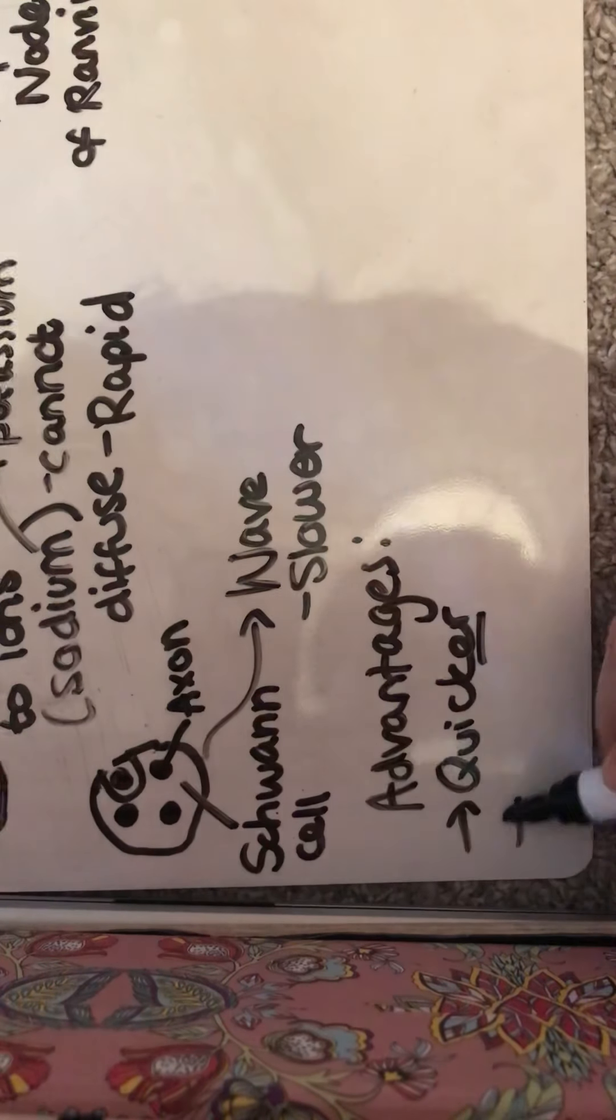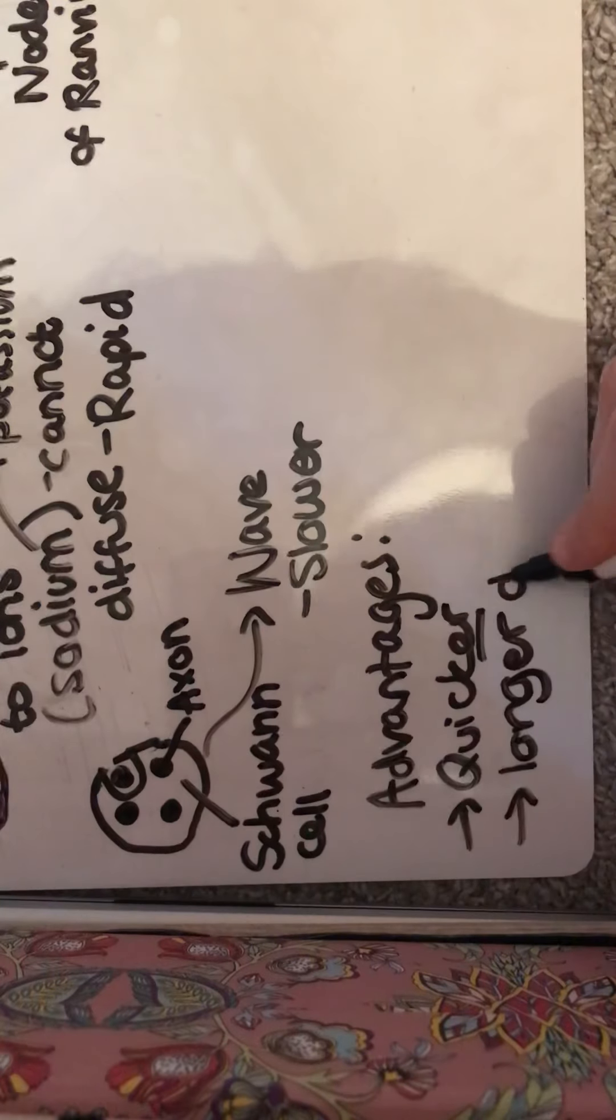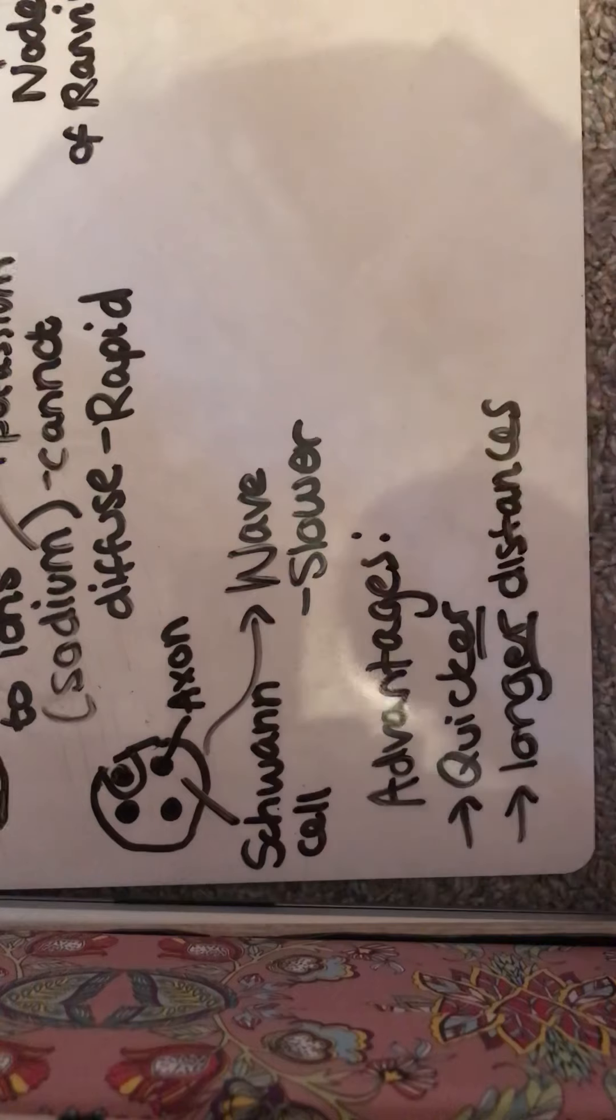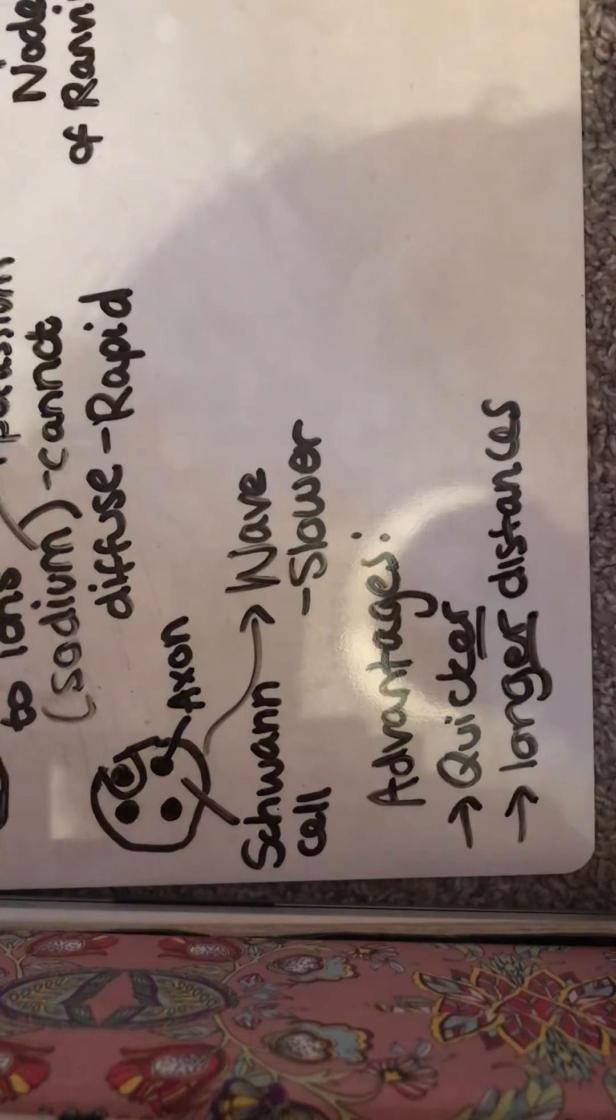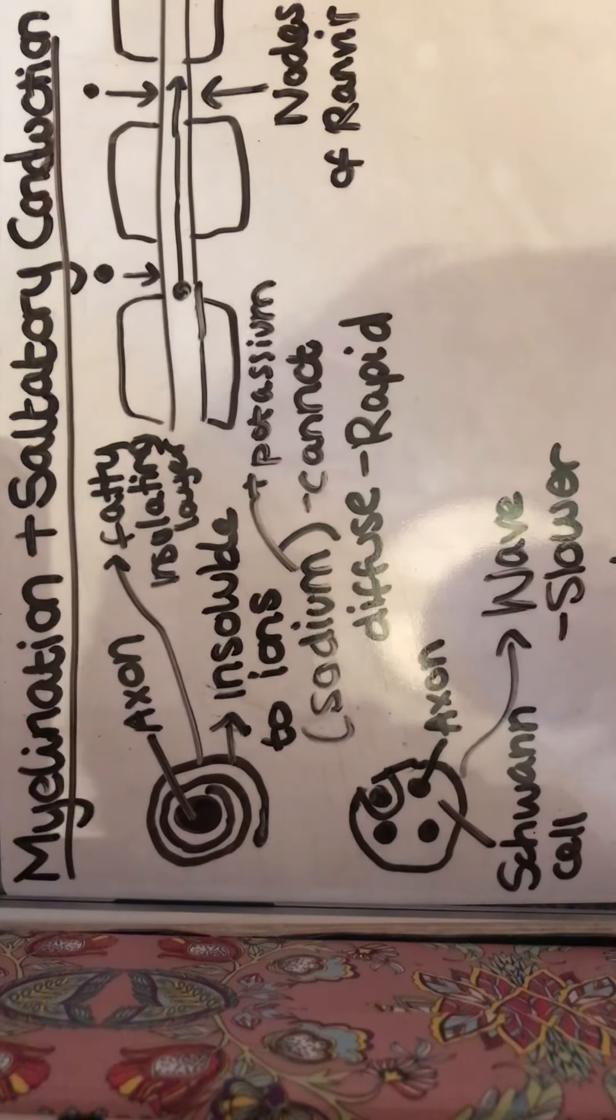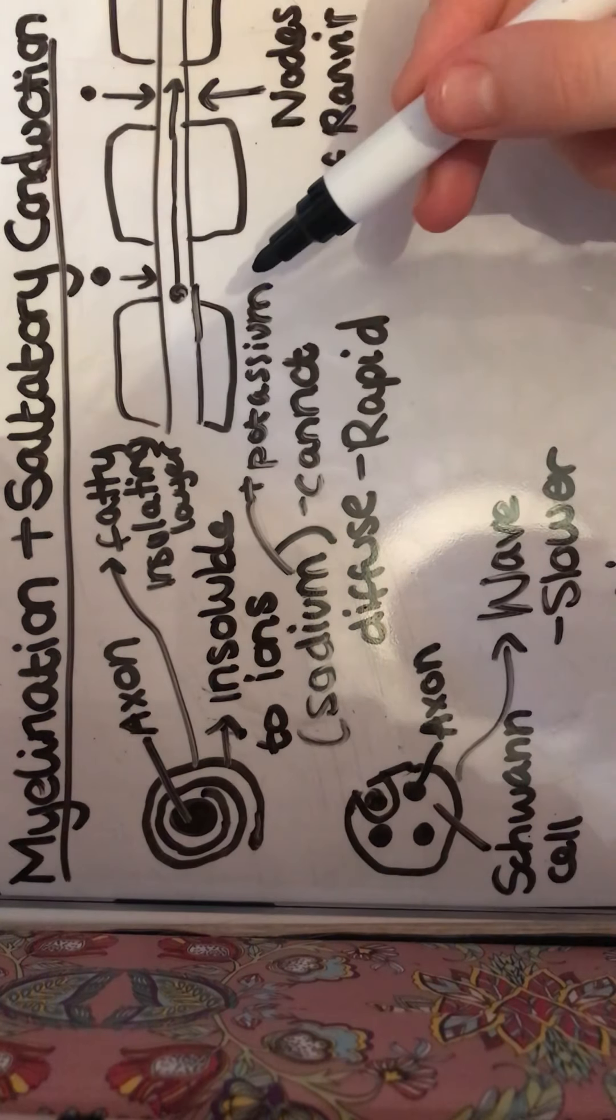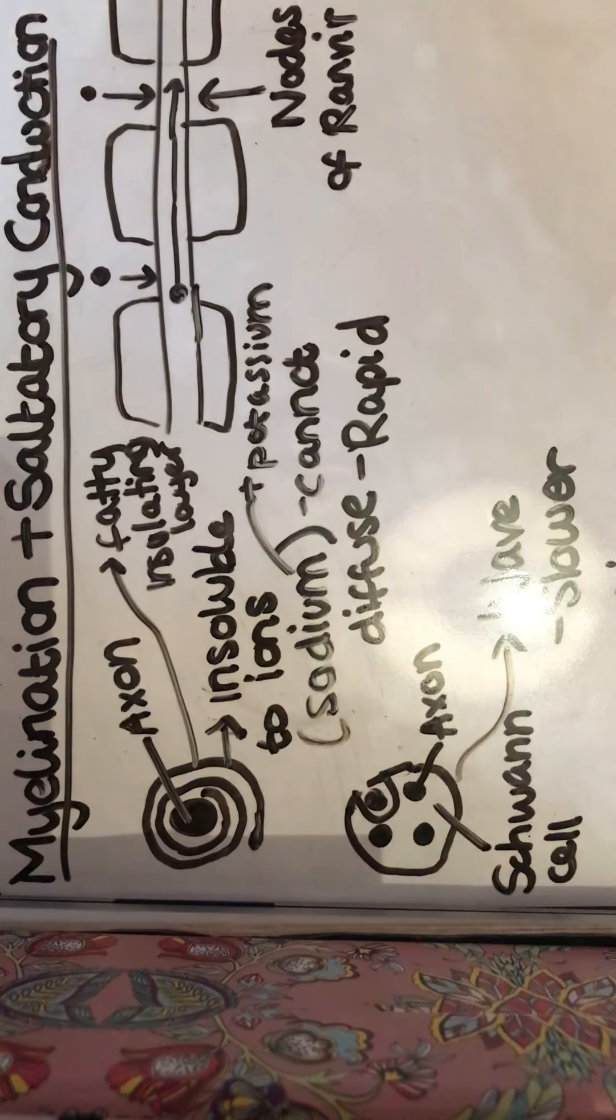It can carry them across longer distances than if you were having a non-myelinated neuron. And yeah, they're the main two ones, really. And the main point about myelinated neurons is that they allow saltatory conduction to occur.